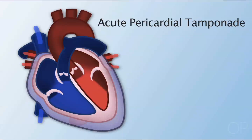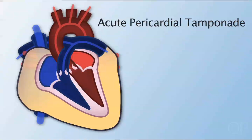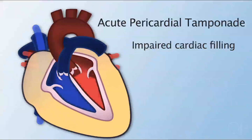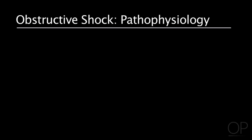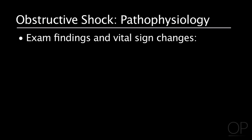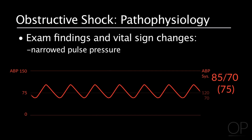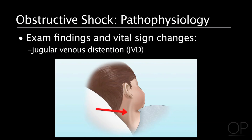With pericardial tamponade, there's an accumulation of pericardial fluid which the heart can tolerate up to a certain point — generally a sizable amount of fluid collecting — which impairs cardiac filling, ultimately decreasing cardiac output and oxygen delivery. Things you might see on exam or vital sign changes include pulsus paradoxus, narrowed pulse pressure, pericardial rub, and JVD or jugular venous distension.